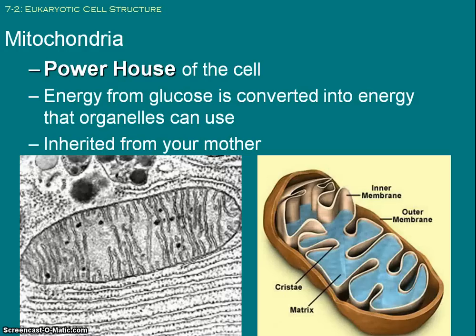The mighty mitochondria — the powerhouse of the cell. The mitochondria makes ATP. This is where cellular respiration happens, where glucose gets converted into ATP. The mitochondria are also inherited from your mother — inherited maternally — so you can actually check their DNA and you'll see your maternal line.